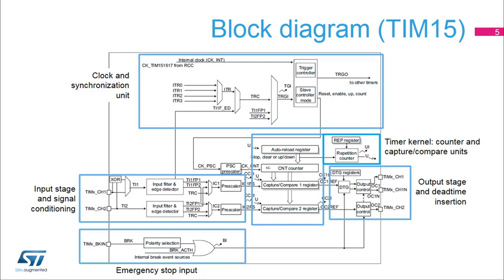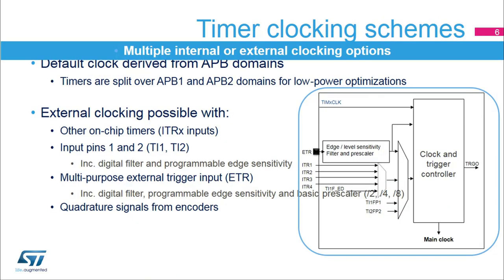TIM-X-CH1 and TIM-X-CH2 appear on both sides to indicate that they are both input and output capable. A TIM-X-BKIN input can be used for a PWM emergency shutdown. The timer features multiple clocking options. The clock and trigger control handles the clock for the counter. The default clock comes from the reset and clock controller, linked to one of the APB clock domains.